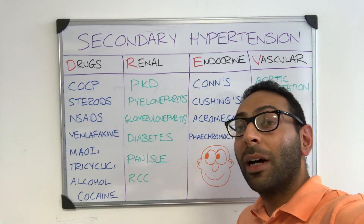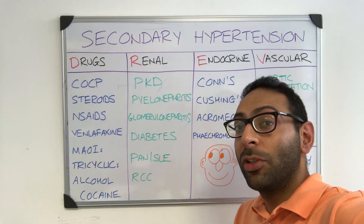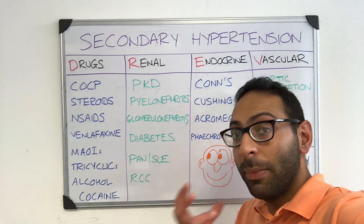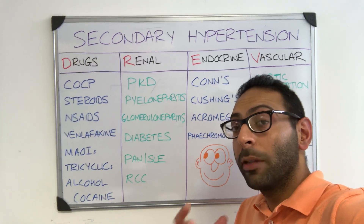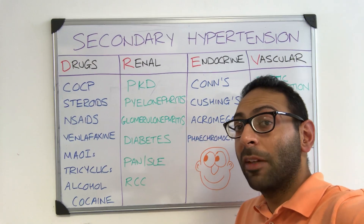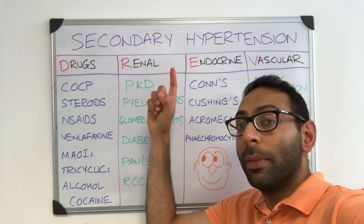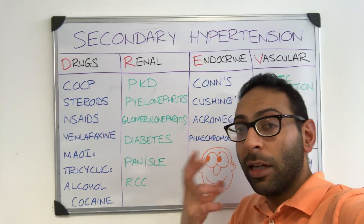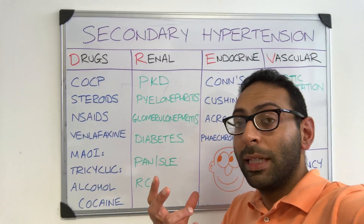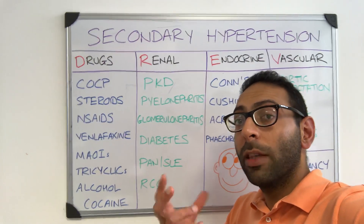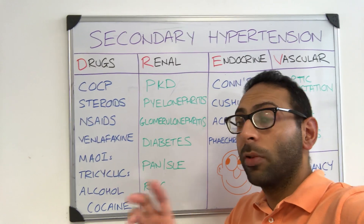You've got a patient with hypertension and you don't think they have essential hypertension or hypertension of unknown cause. You think they're one of the 5 to 10% of patients who have a secondary cause of hypertension — perhaps it's a young patient and you're thinking a little bit deeper. What are the four things you need to think about in terms of causes?